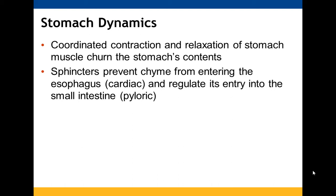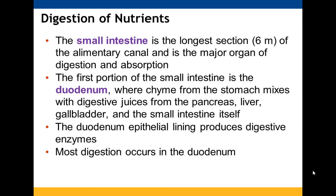We don't want that acidic chyme to go back up into the esophagus, and we want to make sure it doesn't enter the small intestine until it has been somewhat digested. The sphincters act as stop-and-go entryways between the esophagus and stomach, and between the stomach and small intestine. The small intestine is the longest section of our alimentary canal — at least in humans — and this is where the vast majority of digestion and absorption takes place.